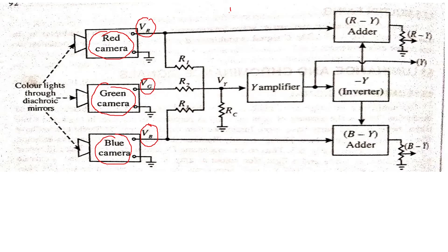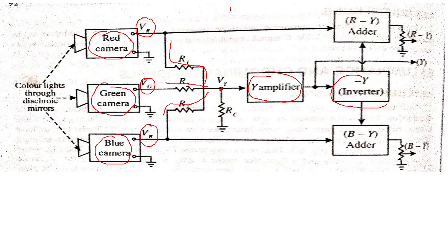The three cameras — red, green, and blue — generate voltages VR, VG, and VB. These three voltages are taken through resistances to a common point and fed into a Y amplifier. The Y amplifier generates the luminance or brightness signal from all three color inputs. That brightness signal is also inverted and taken as the brightness output — the Y signal.